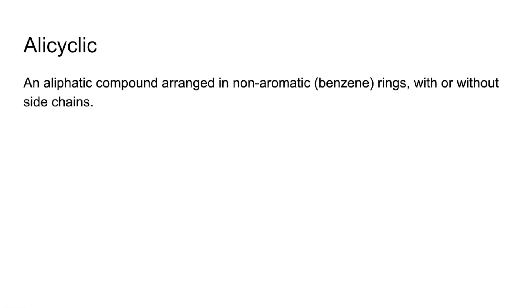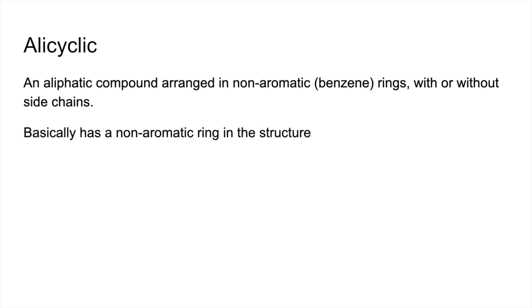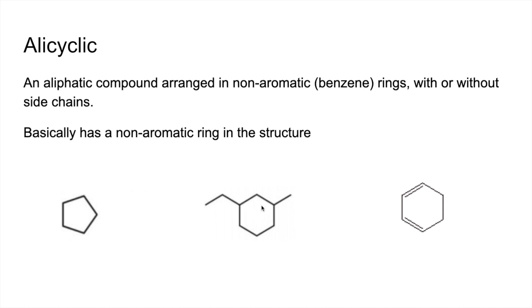Alicyclic — that's an aliphatic compound arranged in non-aromatic rings, with or without side chains. So basically, it's got a non-aromatic ring in the structure. There are some examples: this first one doesn't have any side chains, this one does, and this is not benzene because it's missing that third carbon-carbon double bond. So these are all alicyclic.